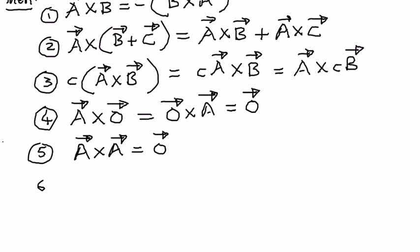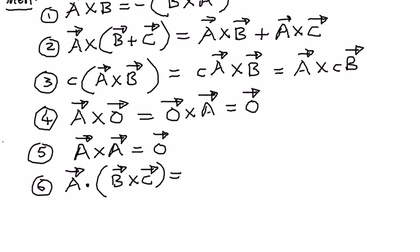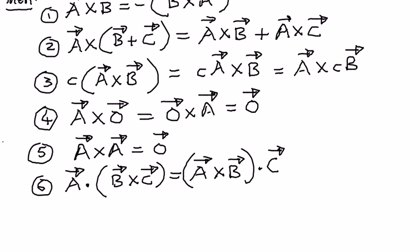The next property tells us that if we have vector A and take the dot product with (vector B cross vector C), the result is equal to (vector A cross vector B) dotted with vector C. So we first do the cross product between A and B, and then do the dot product with C, and the result is the same.